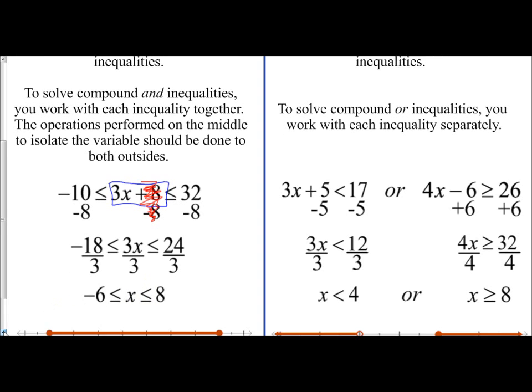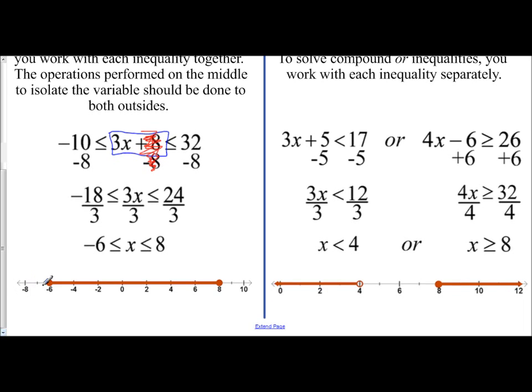And if we look at the solution space for this, we see it graphed here that we have a closed circle on negative 6, a closed circle on 8, and my solution is in between them. And that should make sense when you look at this compound inequality statement.